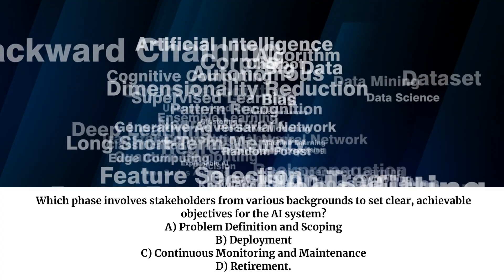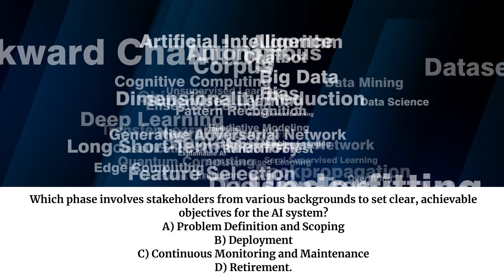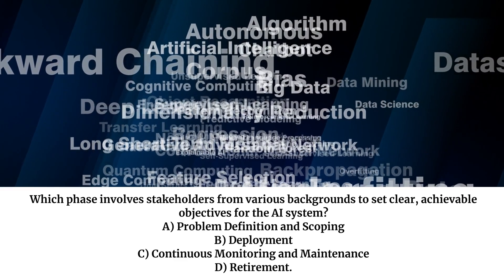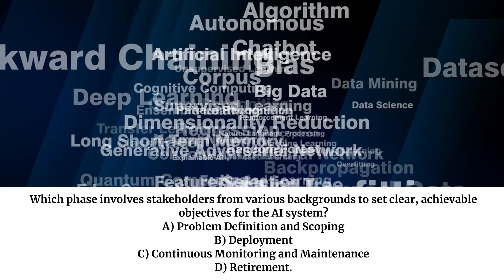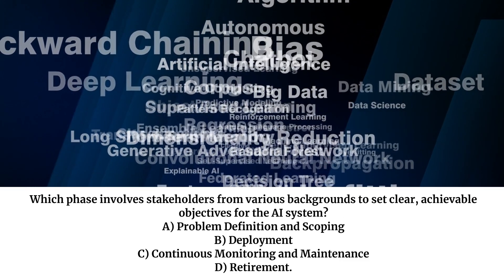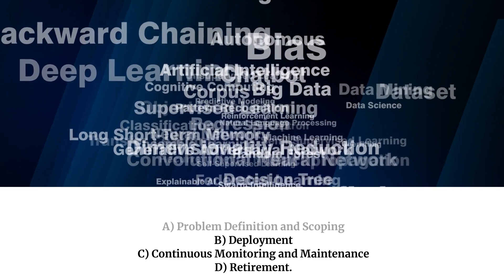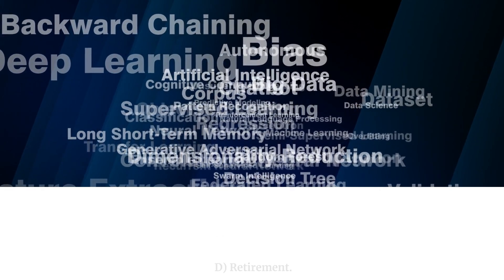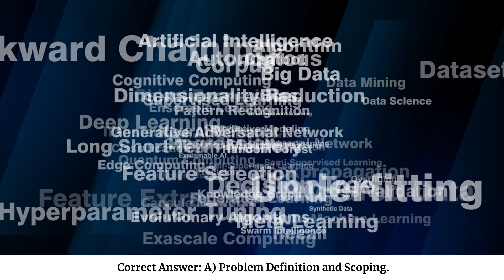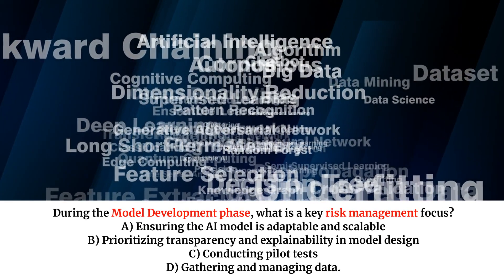Which phase involves stakeholders from various backgrounds to set clear, achievable objectives for the AI system? A. Problem definition and scoping. B. Deployment. C. Continuous monitoring and maintenance. D. Retirement. Correct answer: A. Problem definition and scoping.